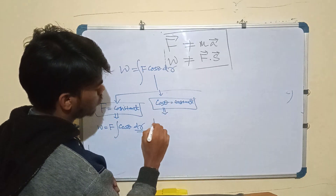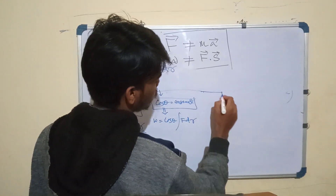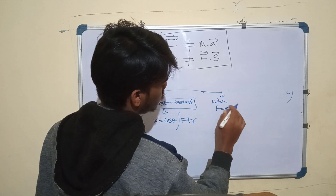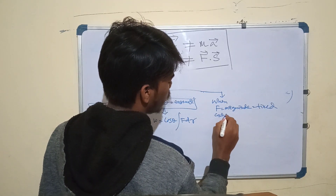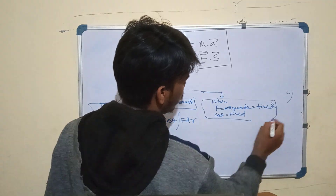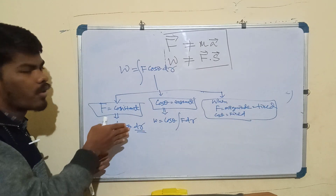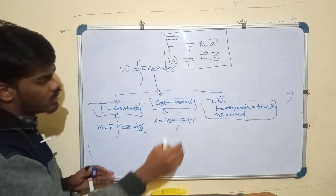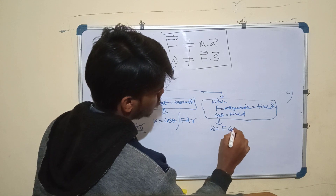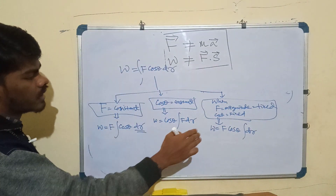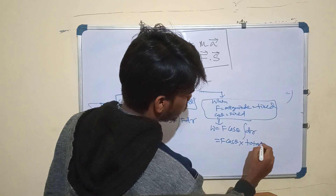When both the magnitude of force is fixed and the angle between the direction of force and the small displacement is fixed at each instant, then W equals F cosθ times the integral of dr. Since we take dr as a length element, the integral of dr gives the total distance. So W equals F cosθ times the total distance.